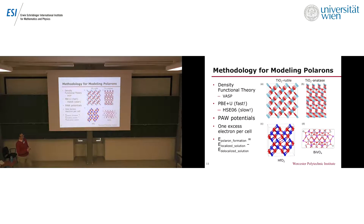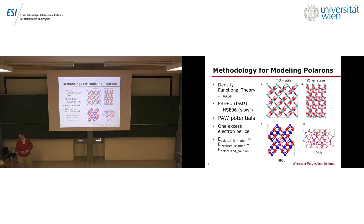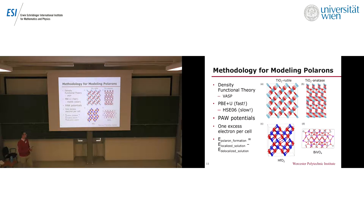We're modeling four different metal oxide materials: two different phases of TiO2, hafnium dioxide, and BiVO4, using PAW potentials. We're adding one extra electron to these cells, so there's one extra electron that could potentially form a polaron. The polaron formation energy definition I'm using is: the energy of a localized solution minus the energy of a delocalized solution. If this energy is negative, polaron formation is favorable.